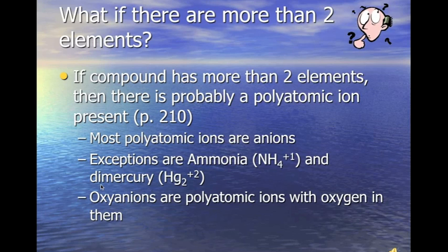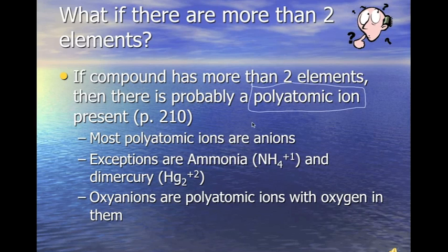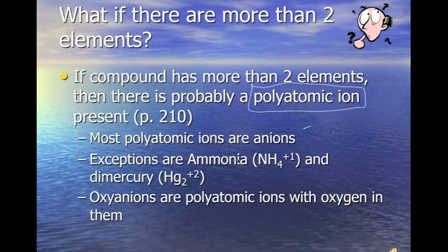What if a compound has more than two elements? If a compound has three elements, there's probably a polyatomic ion present. Most polyatomic ions are anions, meaning they have a negative oxidation number — they take electrons. The exceptions are ammonium and dimercury.